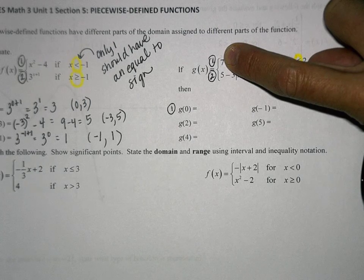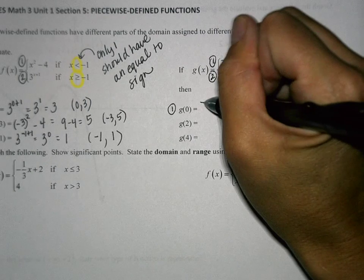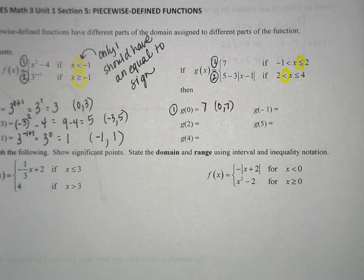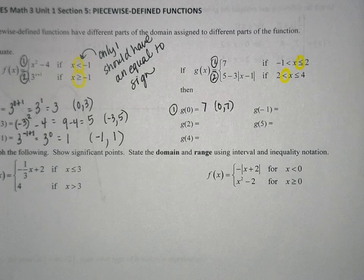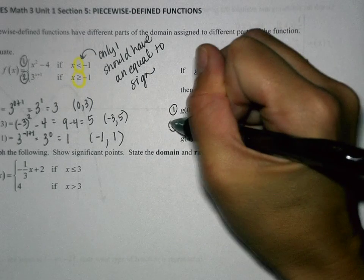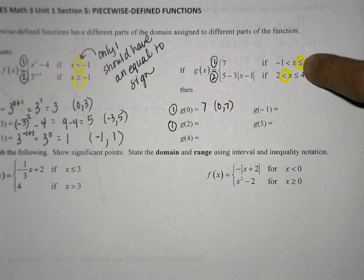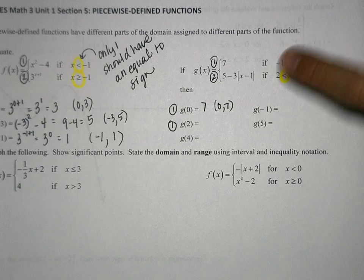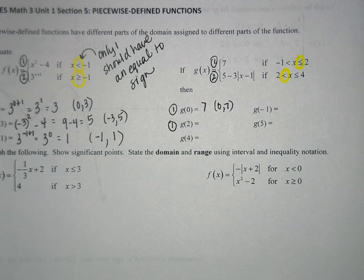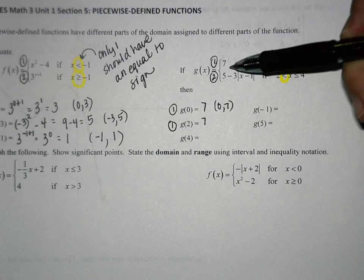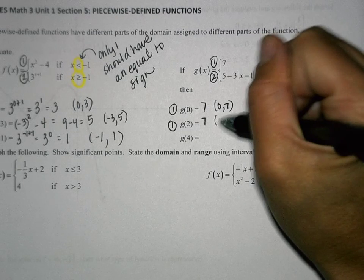So the answer is just 7. As an ordered pair, that's (0, 7). For the value 2, we use equation 1 — because it has the equal to sign. There's no x for me to plug 2 into, so the answer is just 7. That ordered pair is (2, 7).